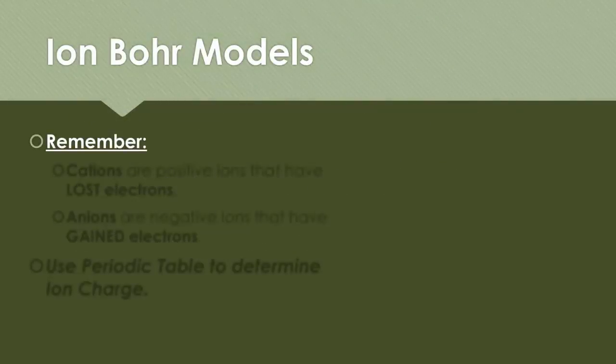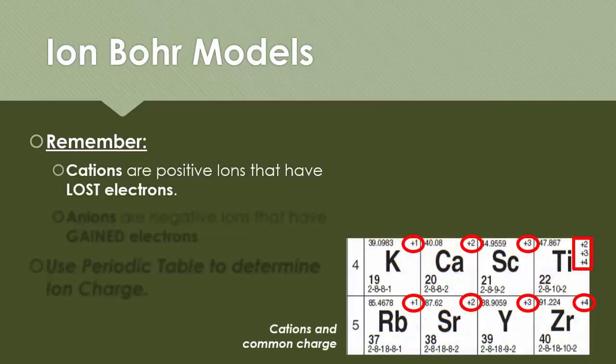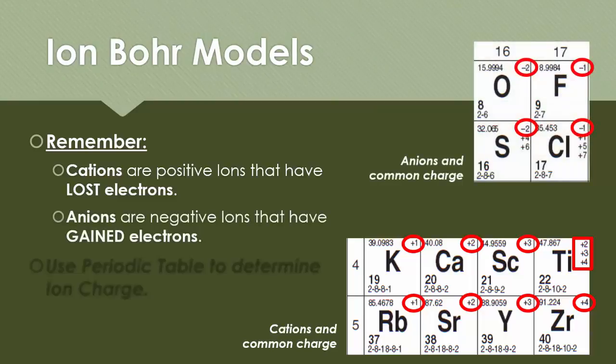So if you remember from lesson 4, cations are positive ions that have lost electrons, so if you look at all these lovely examples in the bottom corner, and then anions are negative ions that have gained electrons, and again, you can see the charges and the common ions in the corners of the periodic elements.